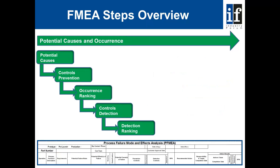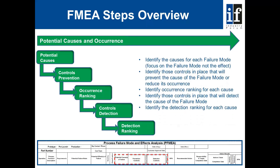We then move on and consider potential causes, controls that prevent these causes, the frequency or recurrence of these causes, detection controls — controls that will detect if the concern has occurred — and then finally the detection ranking. We identify the causes for each failure mode and focus on the failure mode, not the effect. We identify those controls in place that will prevent the cause of the failure mode or reduce its occurrence, identify the occurrence ranking for each cause, identify those controls in place that will detect the cause of the failure mode, and identify the detection ranking for each cause.